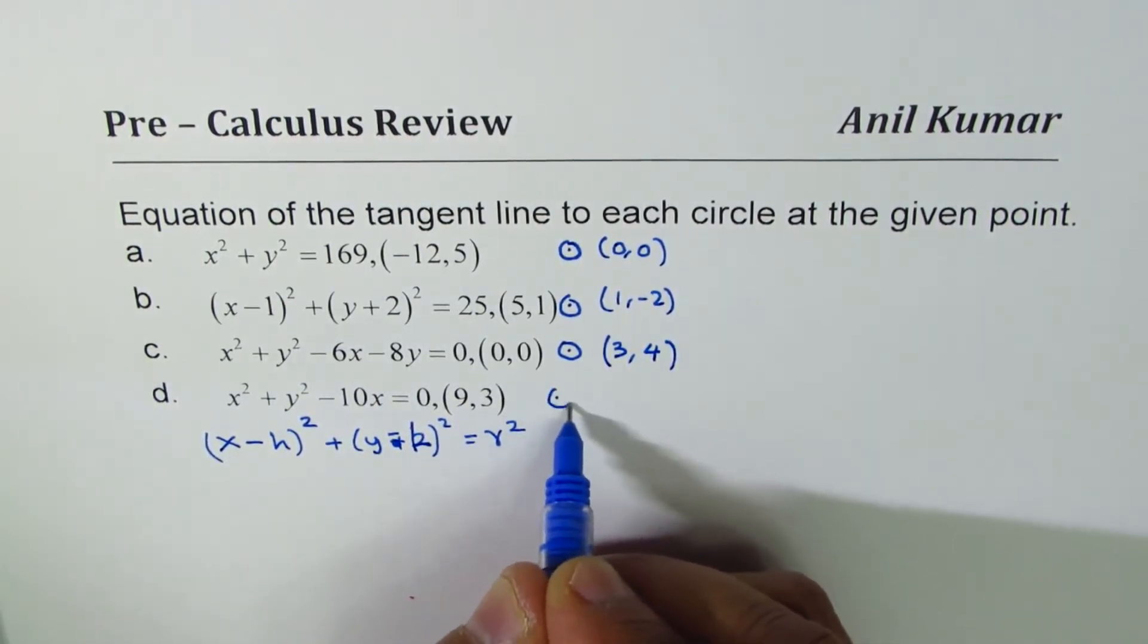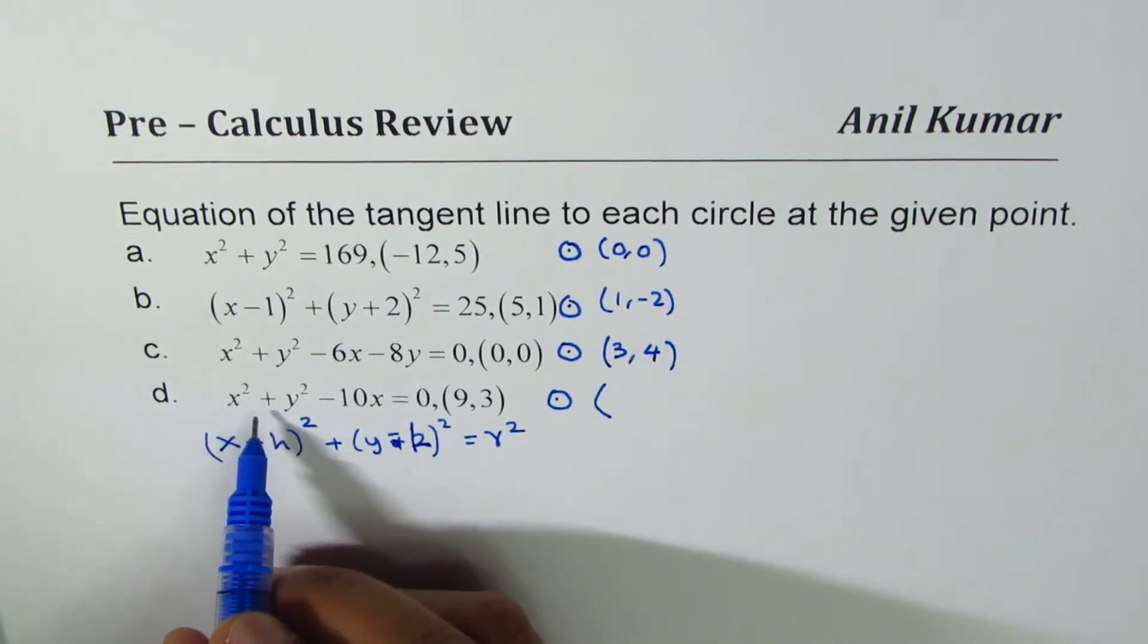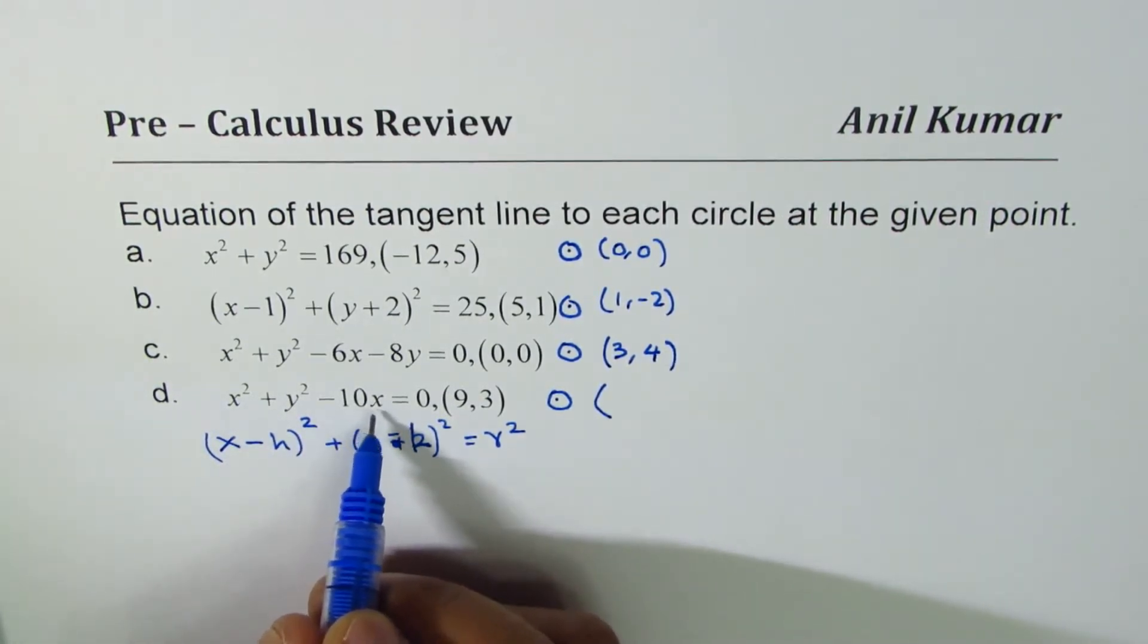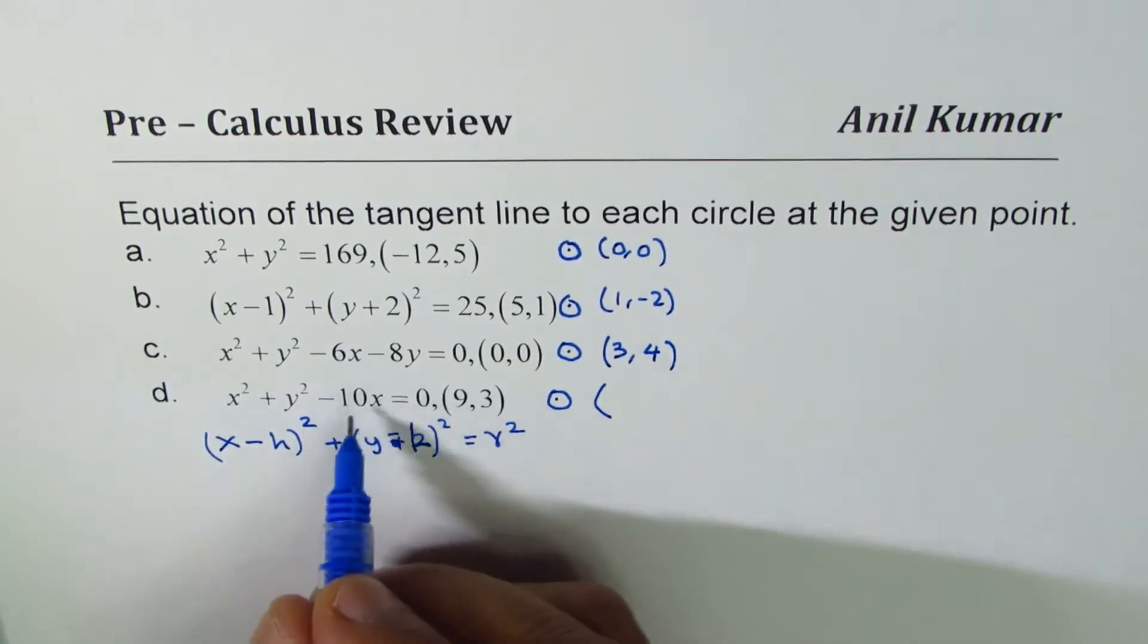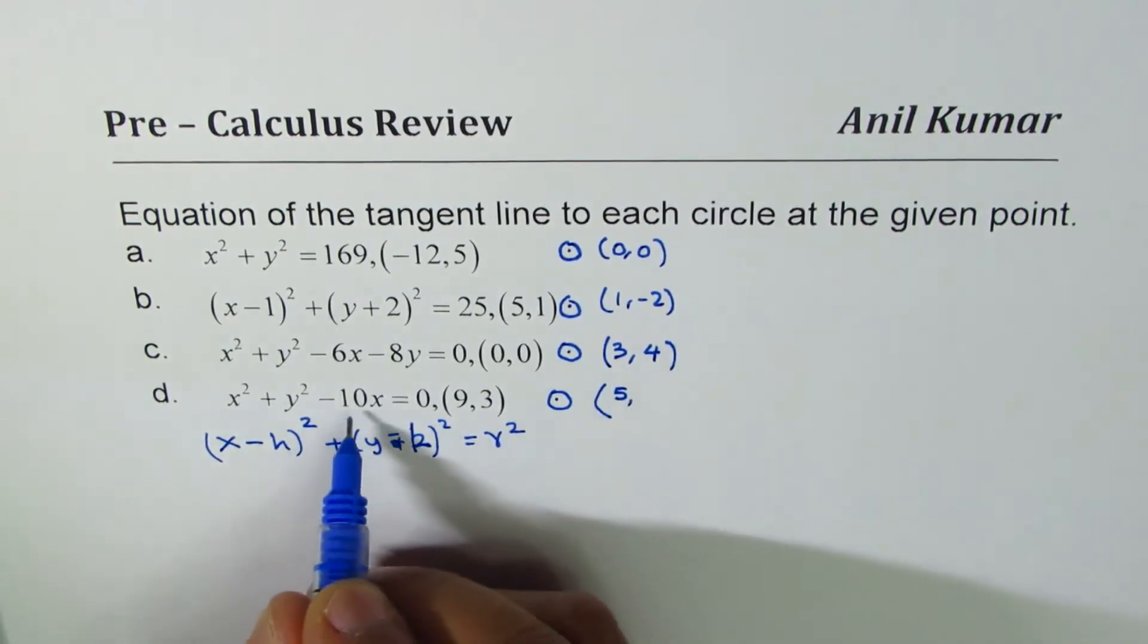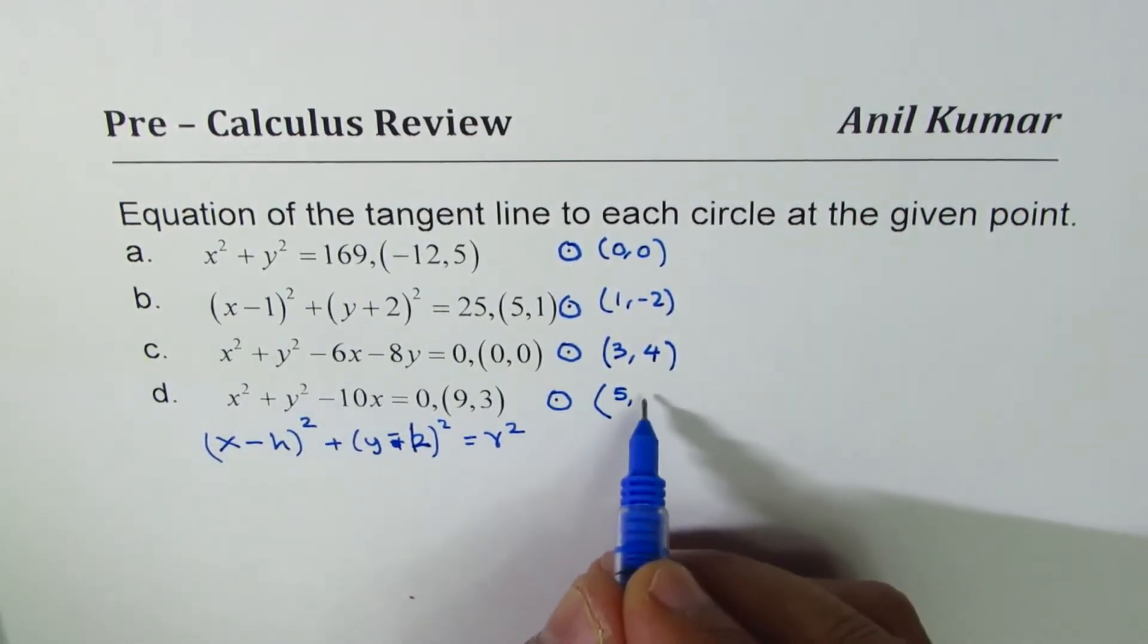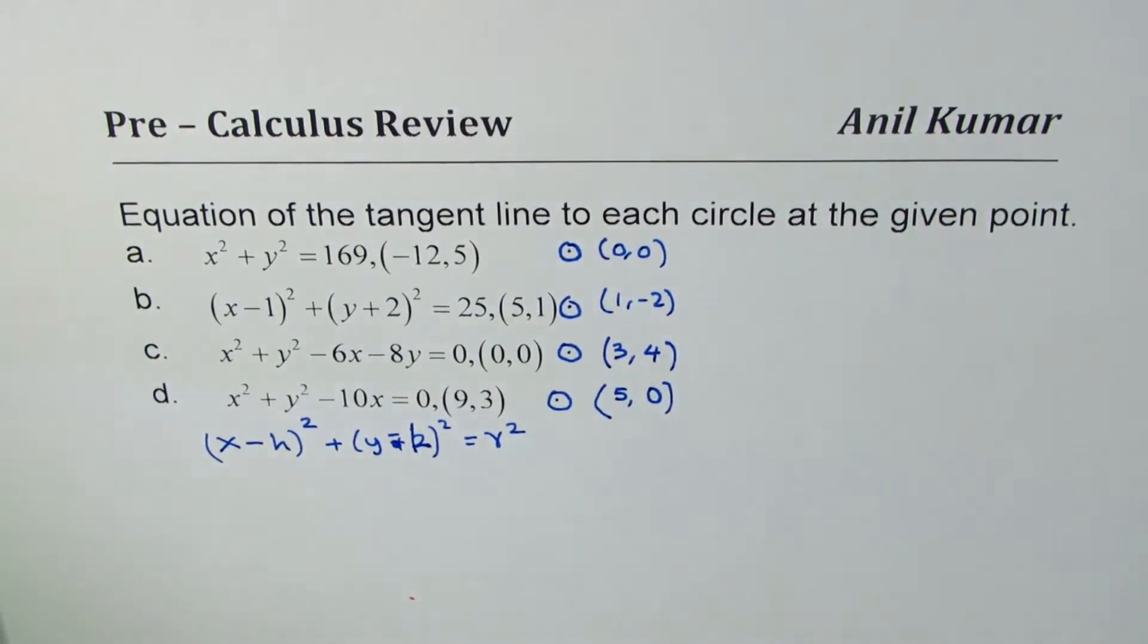Now for this circle, the center will be at—the x value has been translated 5 units. So -10, minus half will be 5, 5 units to the right. The y value remains at the origin. So that becomes the center point for the given circles.